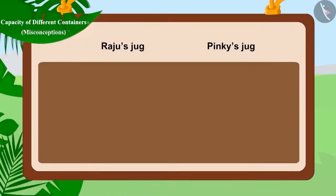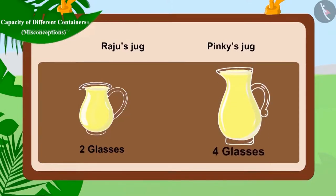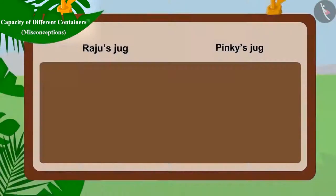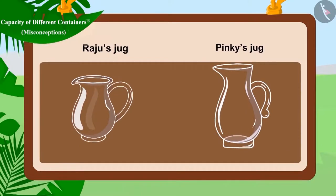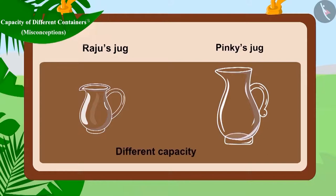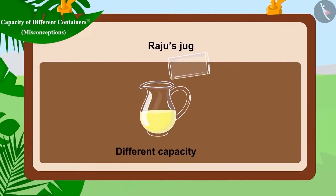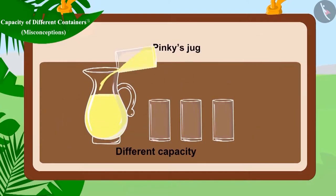In this way, Raju's jug was filled with two glasses of lemonade and Pinky's jug was filled with four glasses of lemonade. But both Raju and Pinky have the same type of container. So, how did this happen? Even though both Raju and Pinky have the same type of container, the capacity of these containers is different. For example, the capacity of Raju's jug is two glasses and that of Pinky's jug is four glasses.